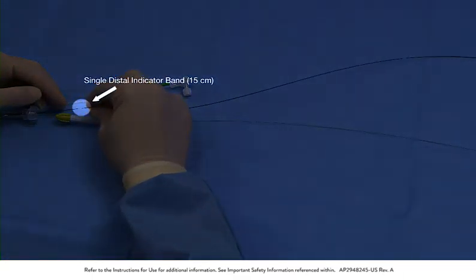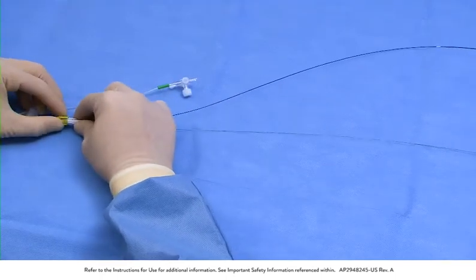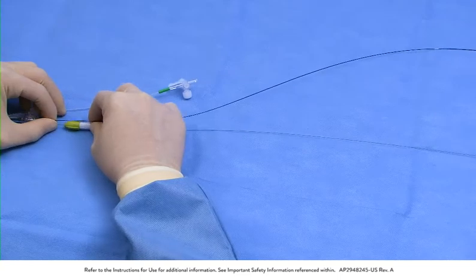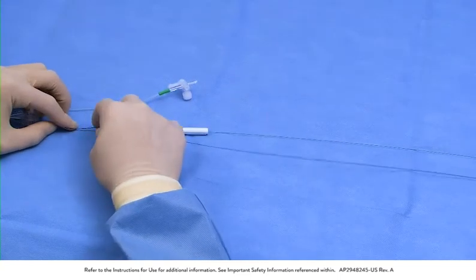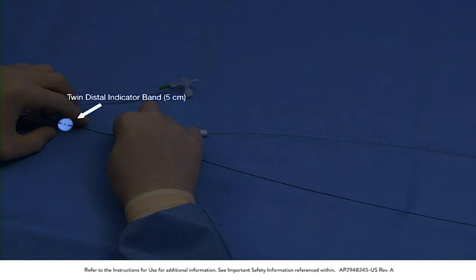Notice the single distal indicator band is positioned 15 centimeters from the rapid exchange exit port, and the twin distal indicator bands are located 5 centimeters from the rapid exchange exit port to aid catheter retrieval.